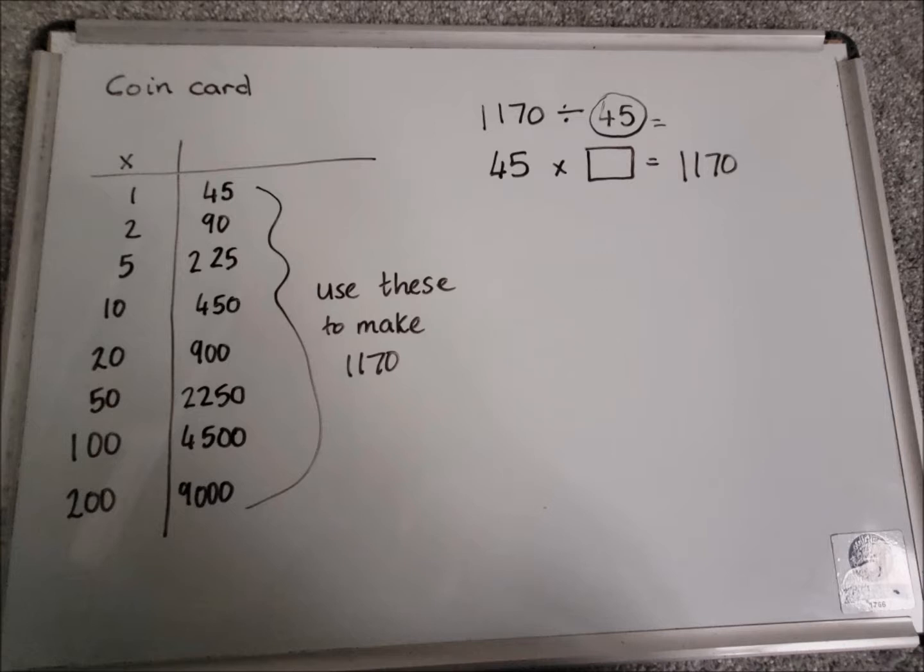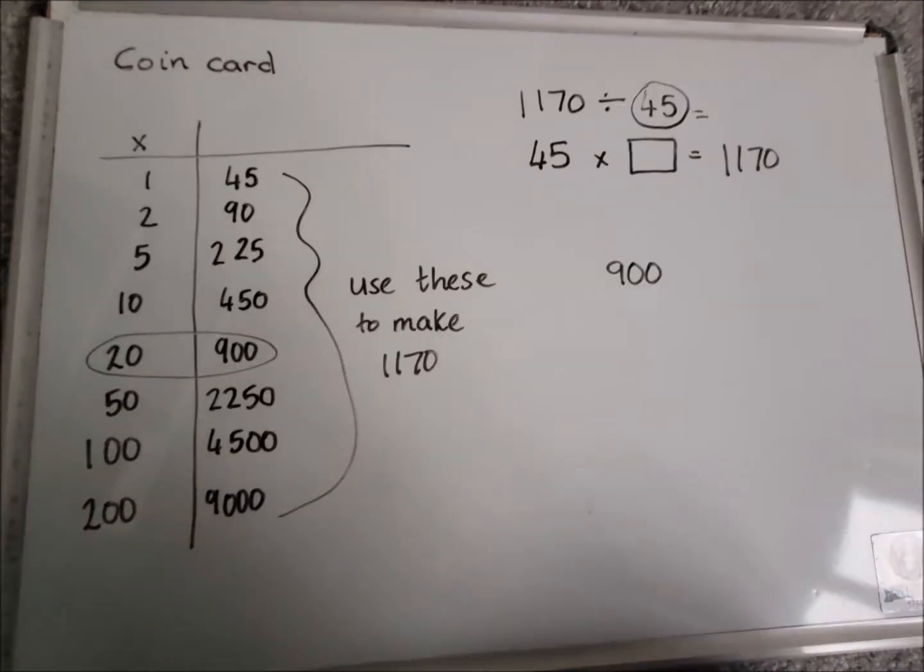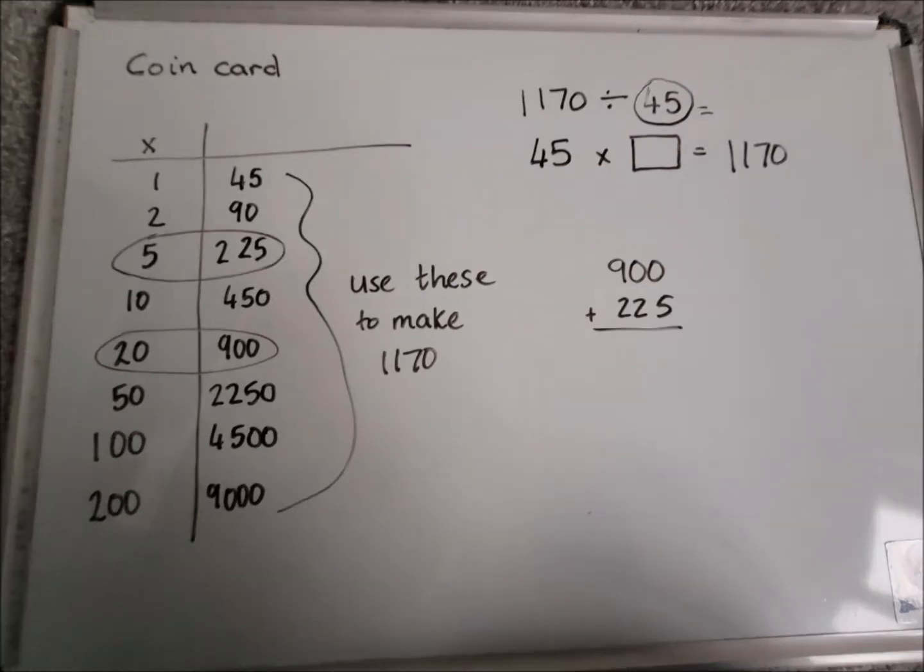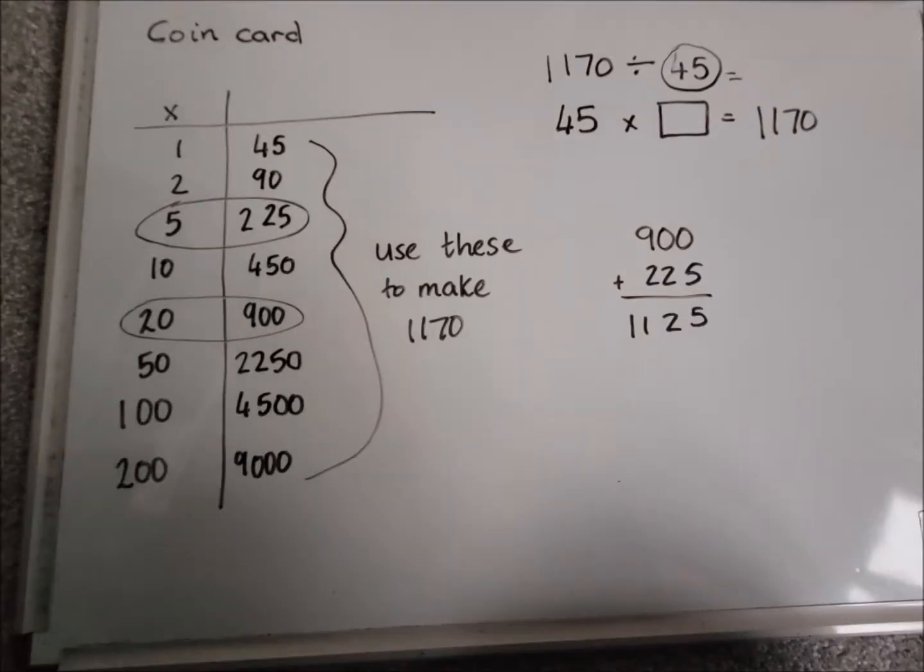So now that I've completed my coin card, we're going to try and use these numbers to make 1170. Different to countdown, we can use the numbers as many times as we like. So the first thing I'm going to do is look for the biggest number that I can use without going past 1170. So I can see there that 900, the 20, is the biggest number I'm going to start with. So I'm going to put that in a column sum at the side. I'm going to add on another number to try and get that target of 1170.